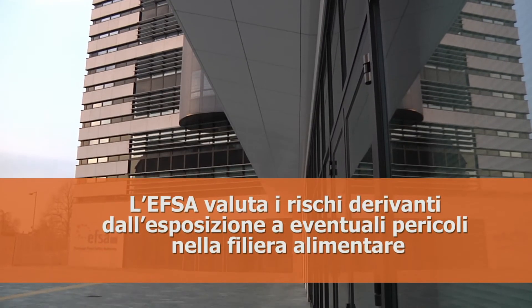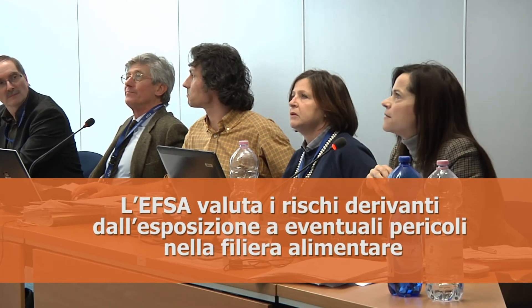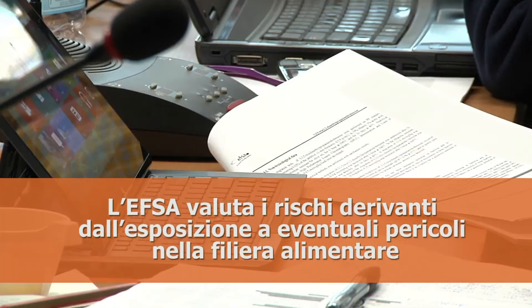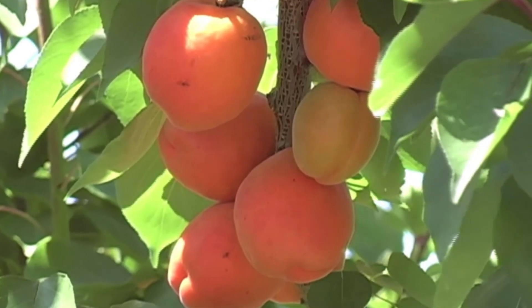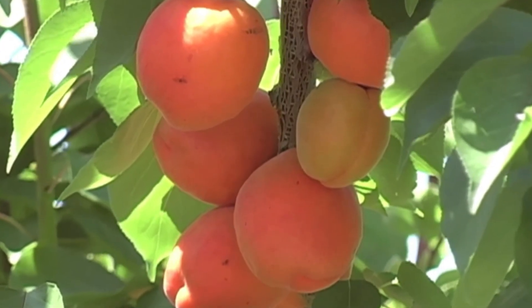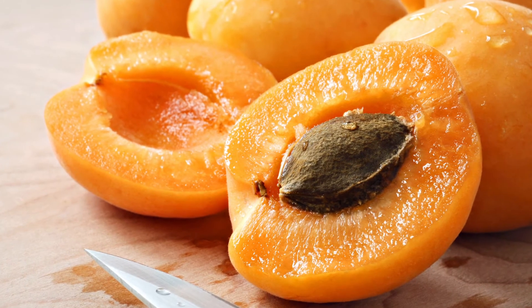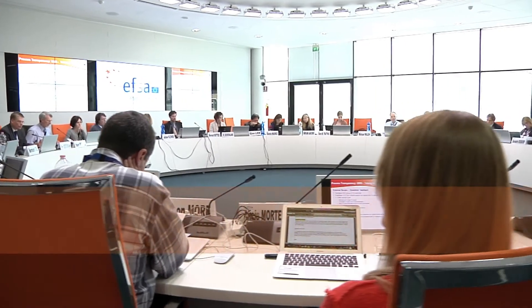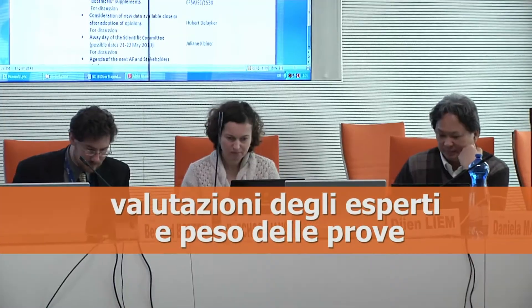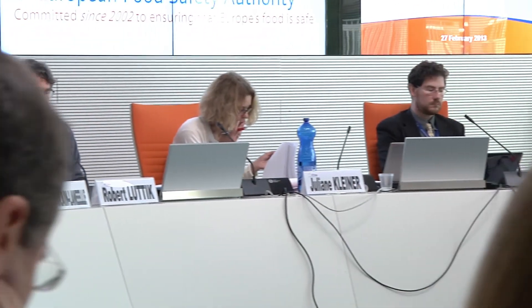EFSA assesses the level of risk based on the likely exposure of humans, animals and the environment to possible hazards in the food chain. A hazard is a possible threat related to the intrinsic properties of a substance. For example, amygdalin is a substance present in the stone of apricots. As a chemical, it's quite toxic and therefore a hazard. But because we do not eat the stone, the consumer is not exposed to it, and therefore we consider that the risk to the consumer is low. We believe that scientists can clarify through expert judgment and the weight of evidence what is or is not an endocrine disruptor.